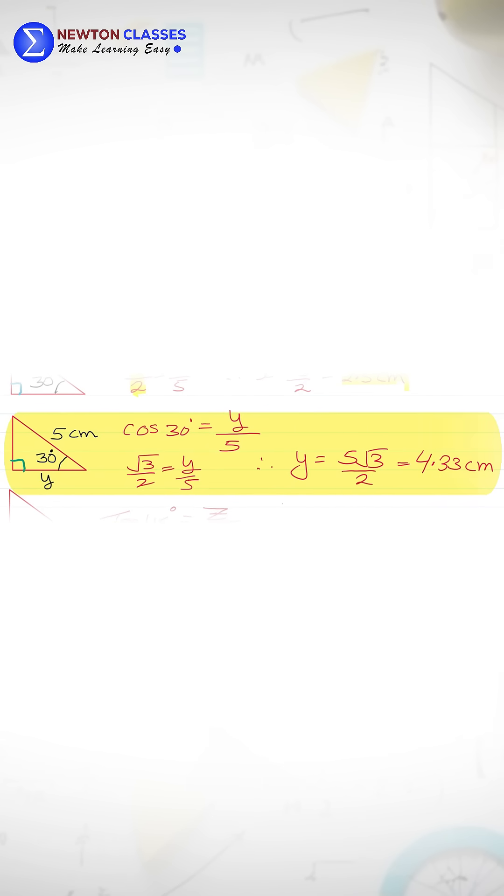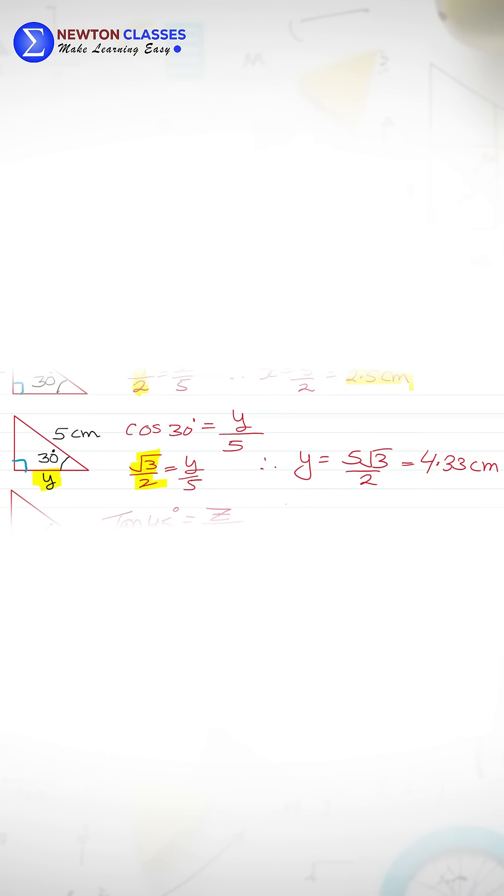In the second triangle, we are supposed to find the adjacent. So cos 30 is square root 3 on 2. This is the adjacent value. If we simplify, we get 4.33 cm.